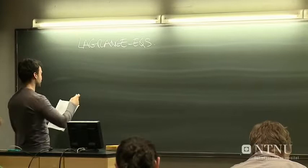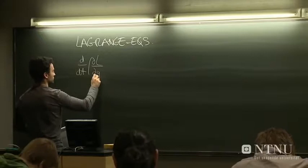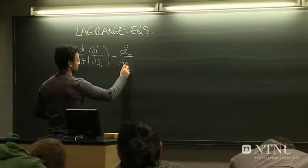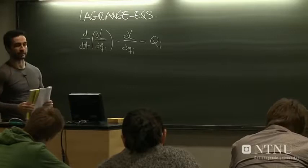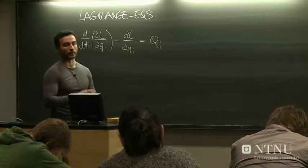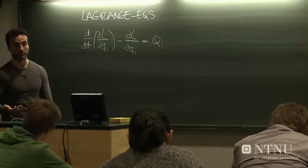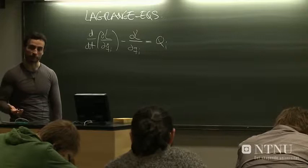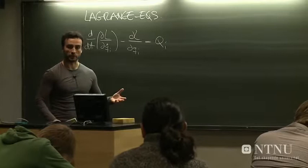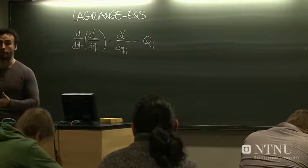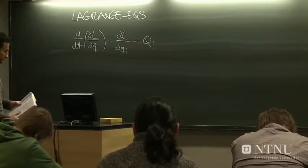So in the previous lecture, we derived these Lagrange equations which quite generally have this form. This L here contains the kinetic energy and the potential energy, whereas this QI, when written like this, is a generalized force which cannot be derived from any potential in the system. So we saw that if the system is conservative, so that all the forces may be derived from some potential, then this is just zero. So when we write the Lagrange equation like this, it's implicitly assumed that this QI contains only the forces that cannot be derived from potentials, such as friction.